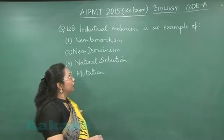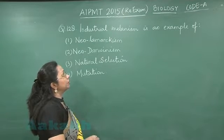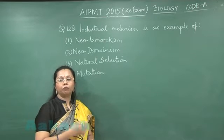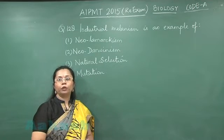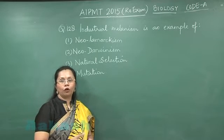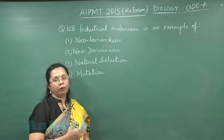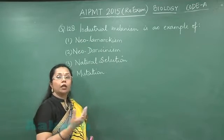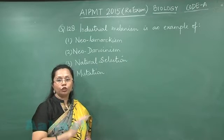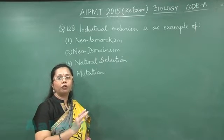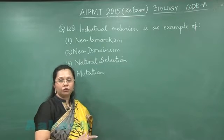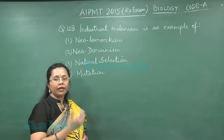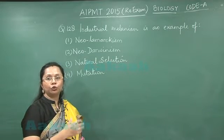Question number 128: industrial melanism is an example of what? In pre-industrial Europe there used to be two different types of moths — the light grey peppered moth and the dark one. The light grey moths were easily camouflaged over birch trees covered by lichens, but with industrialization the pollution increased, the lichens died, and the tree barks got covered with soot.